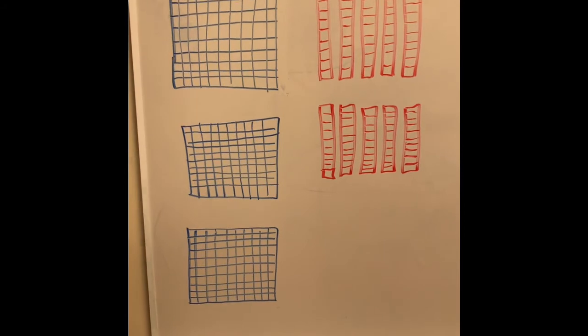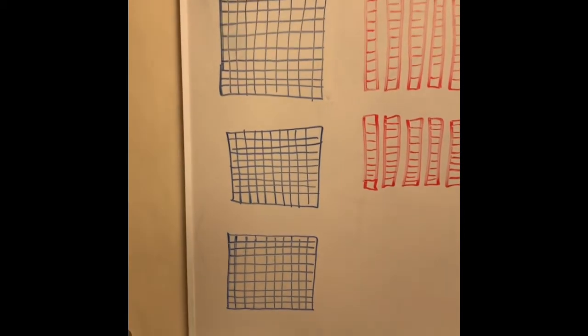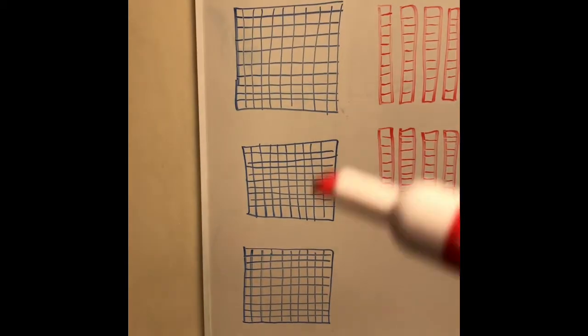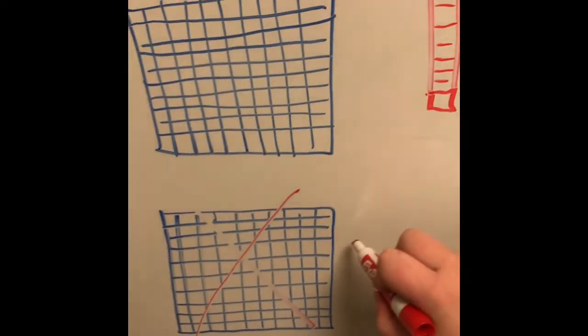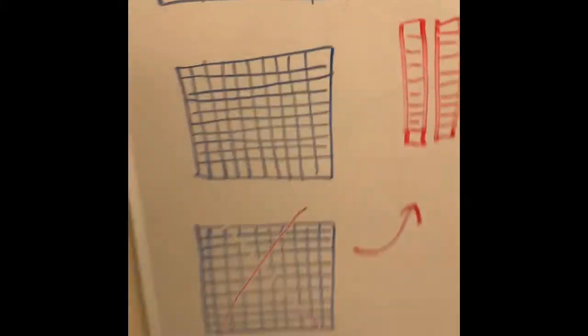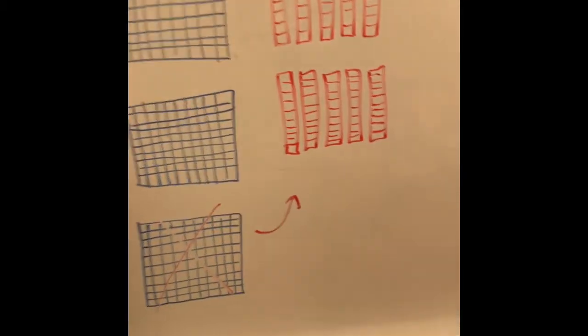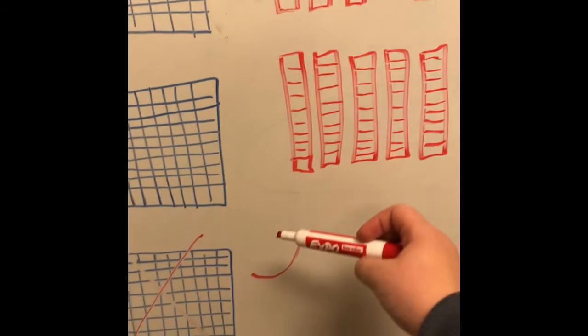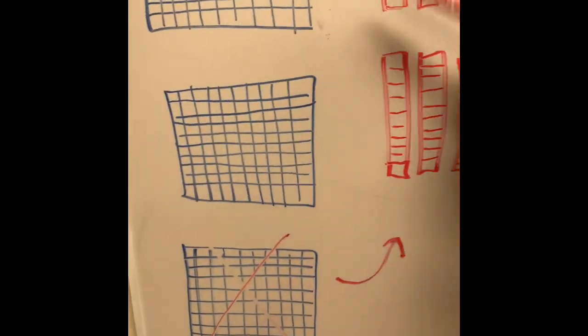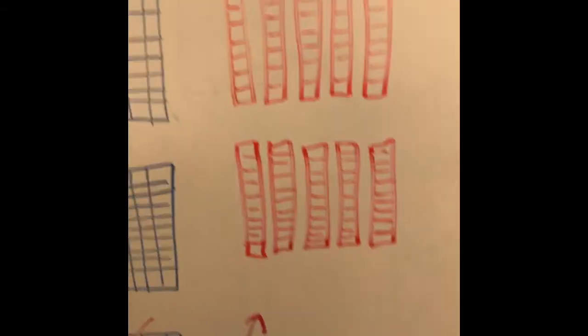Since we had to borrow from the hundreds position, our flats will now become rods because we are borrowing an entire flat and bringing it over to our tens position. So therefore, one flat equals ten rods.